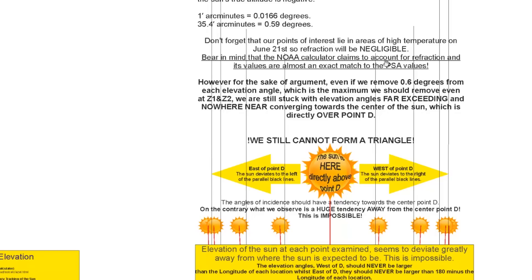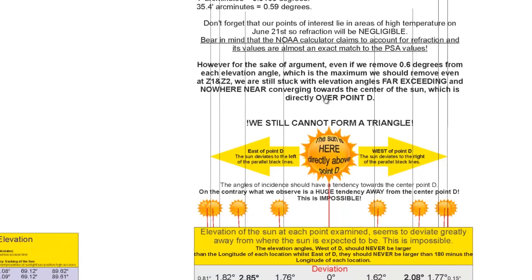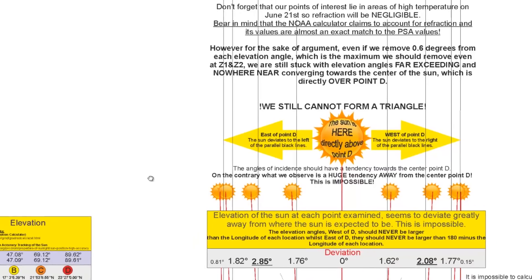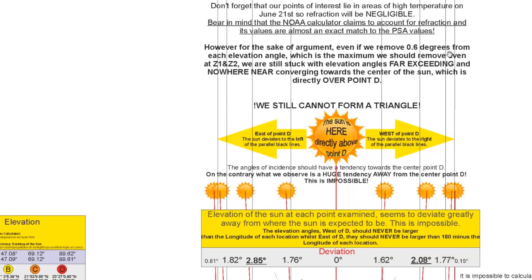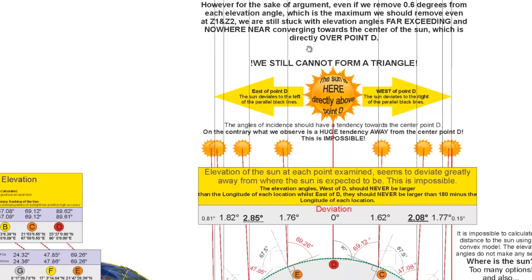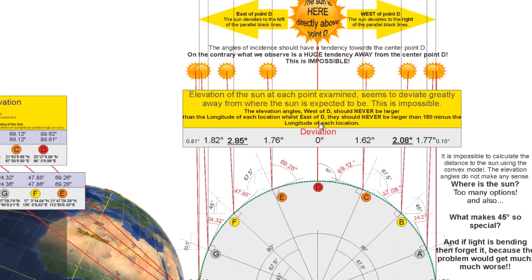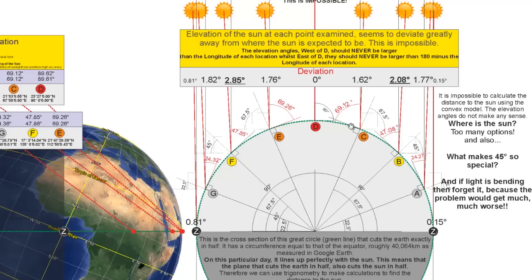Bear in mind also that the NOAA calculator claims to account for refraction, and its values are almost the exact match to the PSA values. However, for the sake of argument, even if we remove 0.6 degrees from each elevation angle, which is the maximum we should remove even for Z1 and Z2, we are still stuck with elevation angles far exceeding and nowhere near converging towards the center of the Sun, which is directly over point D. We still cannot form a triangle. Removing 0.6 degrees from each deviation does not fix anything. So where is the Sun?